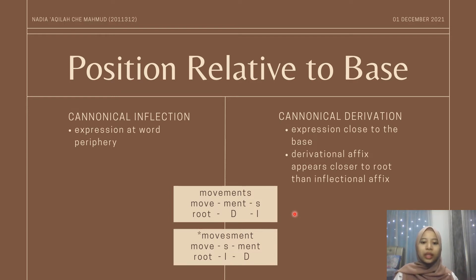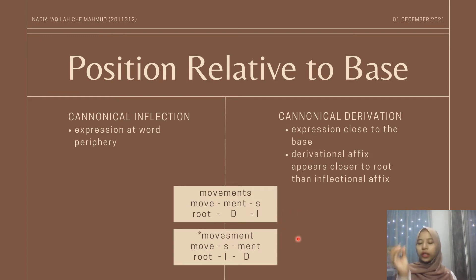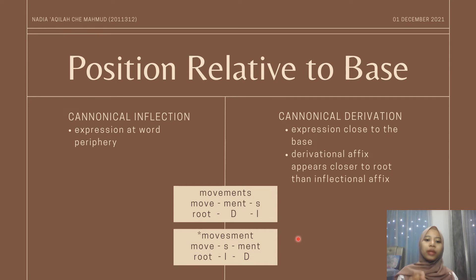The second example here is a wrong example. As you can see, there is an asterisk used to show a grammatically incorrect word. If we move the inflectional morpheme closer to the root, it becomes 'move-s-ment,' which is grammatically wrong.